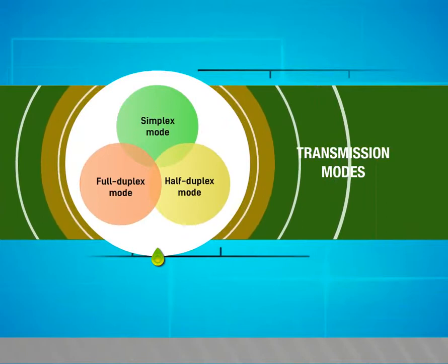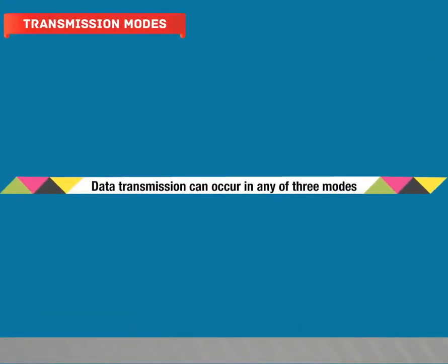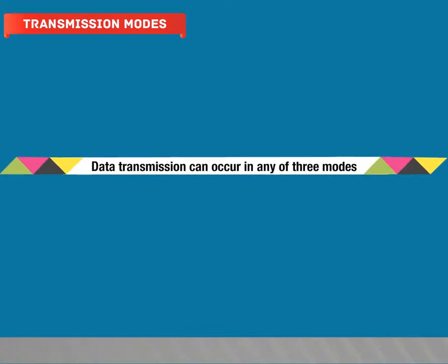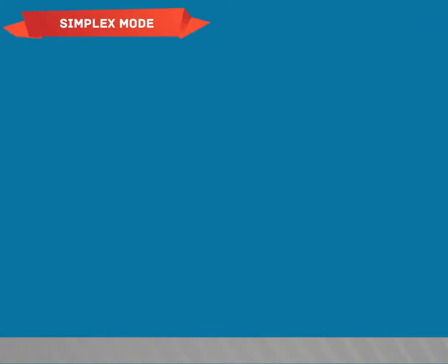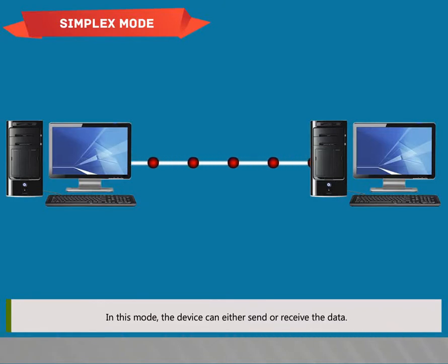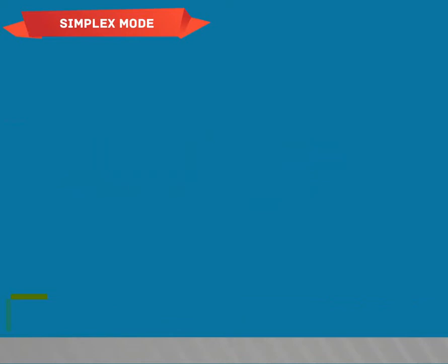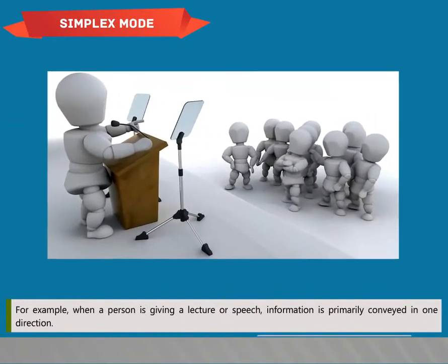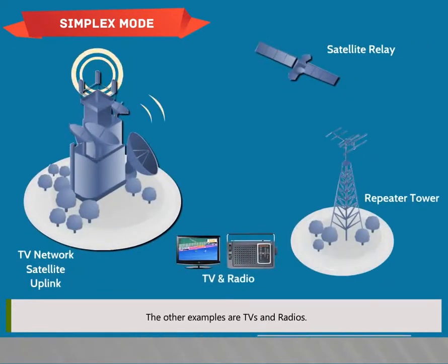Transmission Modes. Data transmission can occur in any of three modes. In Simplex mode, data is transferred only in one direction; the device can either send or receive the data. Simplex transmission is not often used because it is not possible to send back error or control signals to the transmitter. Examples include a person giving a lecture or speech where information is conveyed in one direction; TVs and radios are also examples.